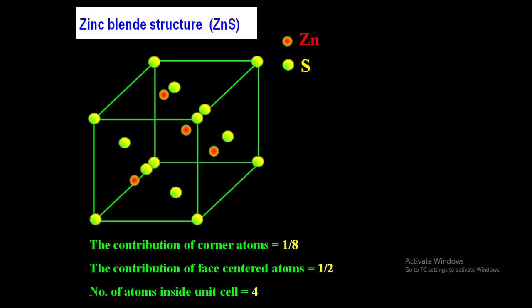Before establishing the relation, we will find how many sulfur ions and how many zinc ions are in this unit cell. For cubic structures, corner atoms have a contribution of 1/8, meaning each corner atom is shared by 8 unit cells. Face-centered atoms have a contribution of 1/2. Sulfur ions are present at the corners and face centers, while Zn²⁺ ions are inside the unit cell along the diagonals.